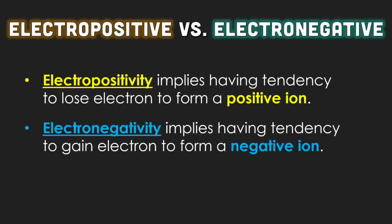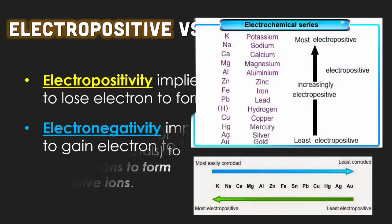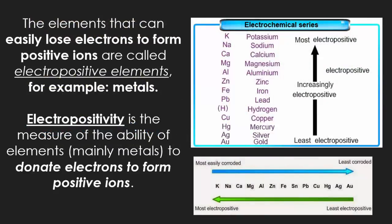Electropositivity implies having the tendency to lose electrons to form a positive ion, while electronegativity implies having a tendency to gain electrons to form a negative ion. The elements that can easily lose electrons to form positive ions are called electropositive elements — for example, the metals.